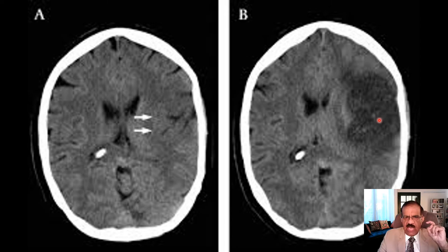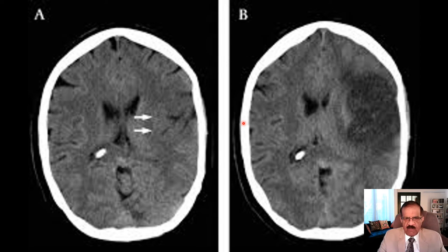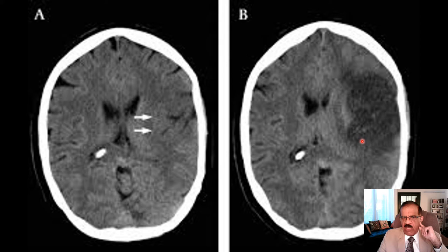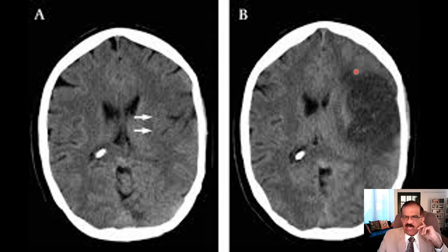Before describing the abnormality, you first have to orientate yourself. When you see a CT, it is as if you are looking into a mirror — this would be the right side although it is on your left. When we describe this opacity, it is on the left side. Since this patient had right-sided hemiplegia, this left-sided lesion correlates with the right-sided hemiplegia.